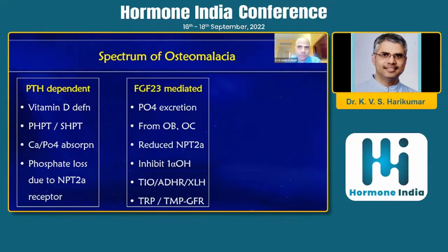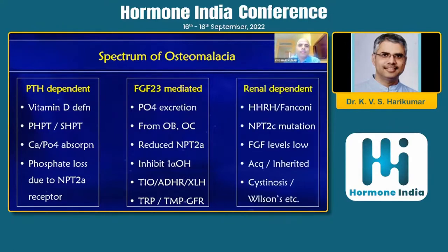FGF23 is the basic phosphaturic molecule, produced from osteoblasts and osteoclasts. It causes phosphate loss and also inhibits 1-alpha hydroxylation, reducing formation of the active form of vitamin D. There are multiple reasons why FGF23-mediated osteomalacia occurs, the commonest being tumor-induced osteomalacia, and there are inherited forms as well. The renal-dependent form has normal FGF23, and these are due to mutations or Fanconi syndrome of proximal tubular dysfunction — FGF23 levels are low and can be both acquired or inherited.